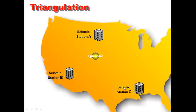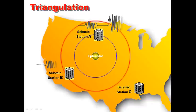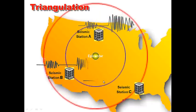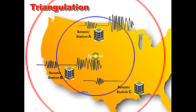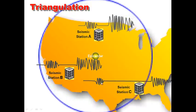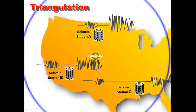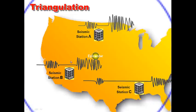Triangulation — notice there are three seismic stations here. 'Tri' meaning three. When an earthquake goes off, the epicenter releases P and S waves. Seismic station A records it first with a short PS lag time delay. Seismic station B records it next with a slightly greater lag time. Seismic station C is the farthest away and has the greatest PS wave lag time. The farther the station, the greater the time delay between the P and the S wave.